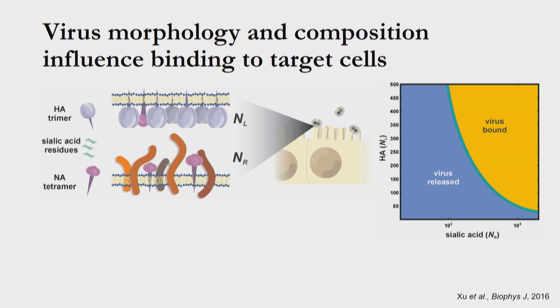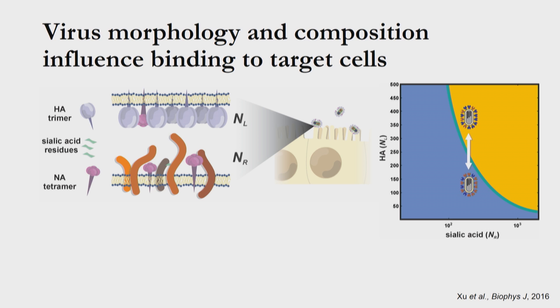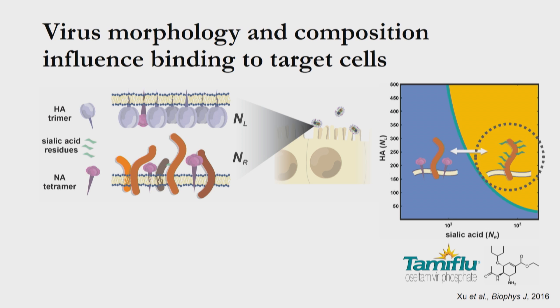This is particularly relevant for the detachment of new progeny virions. Building on a statistical model developed in David Shah's group, we can look at this as a two-dimensional plot with the number of HAs on one axis and the number of sialic acids on the other. The virus has a number of knobs it can turn: changing morphology changes the interface area and thus the number of HAs and sialic acids present; the virus can also change the HA to NA ratio independent of morphology; and through neuraminidase activity, it can modulate sialic acid on the infected cell. This last point is particularly relevant since this is where anti-influenza drugs like Tamiflu or oseltamivir act — they inhibit neuraminidase and block the detachment of new viruses.